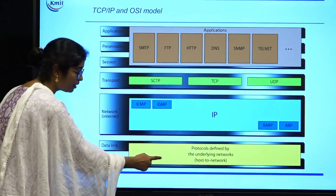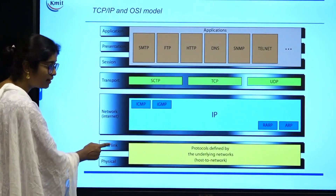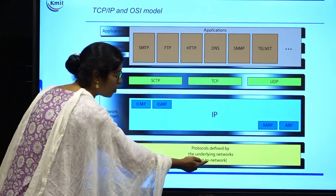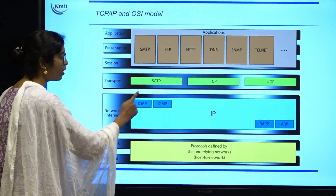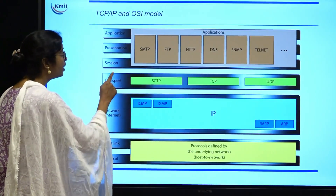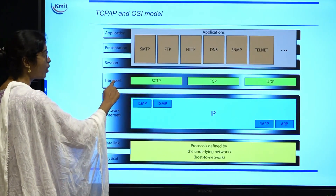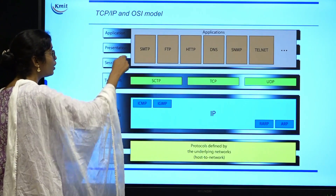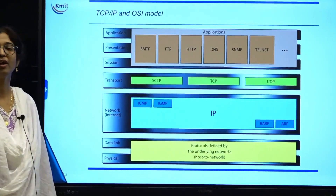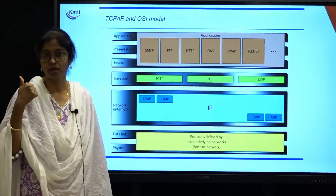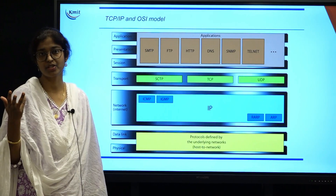The first layer in the TCP/IP model combines the physical layer and the data link layer into a single layer called the host-to-network layer. The network layer of the OSI model becomes the internet layer in TCP/IP. The transport layer remains the same. The session, presentation, and application layers of OSI are combined into a single application layer. So we have 4 layers: host-to-network, network, transport, and application.